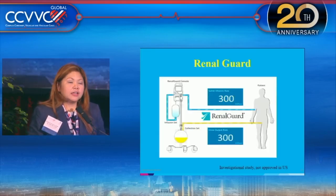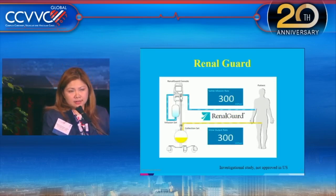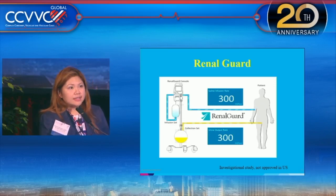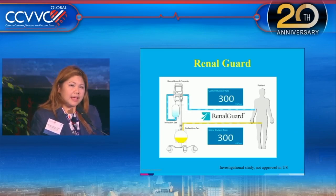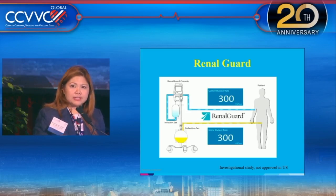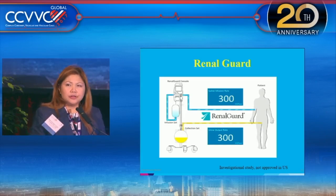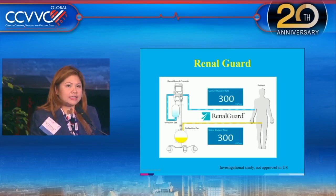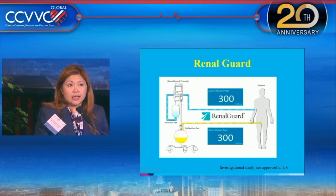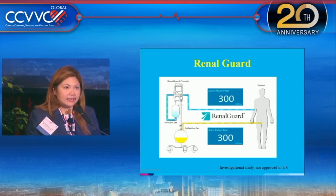RenalGuard is an investigational device not yet approved in America — Dr. Moran is a lead investigator and we are currently enrolling patients. The concept involves forced diuresis with loop diuretics matched with hydration: whatever the urinary output is, you match it with IV fluids. The theory is that inducing diuresis flushes the contrast through the body quickly, and by matching output with hydration you maintain fluid balance. In Europe, the MYTHOS trial showed a decrease in the risk for contrast-induced nephropathy, but it is still being studied here in the United States.